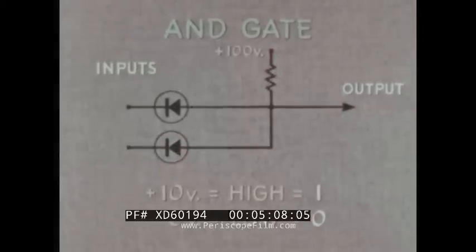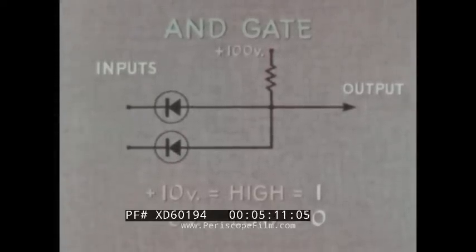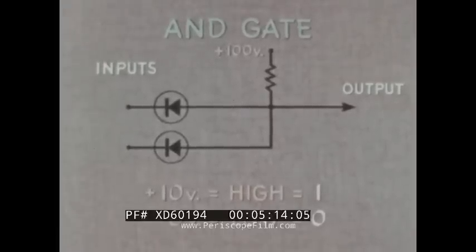This type of circuit with positive bias on the diode anodes is known as a positive logic AND gate.